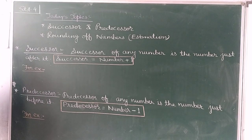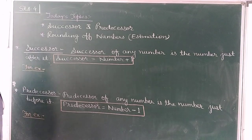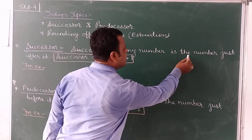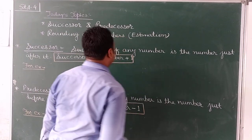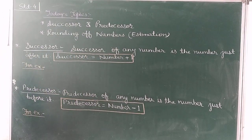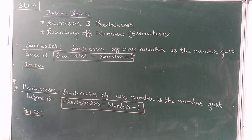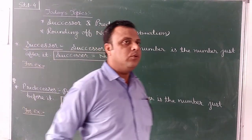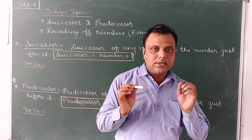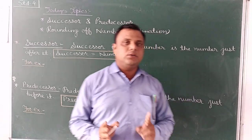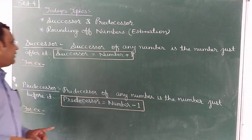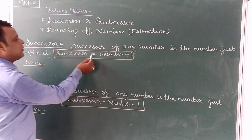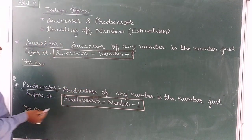The first topic is succession. Succession of any number is the number just after it. It means when you want to write the succession of any number, you have to just add 1 to that number. So the formula is: succession equals number plus 1.